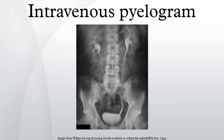In pyelography, compression involves pressing on the lower abdominal area, which results in distension of the upper urinary tract. If compression is applied, a 10-minute post-injection X-ray of the renal area is taken, followed by a KUB on release of the compression. If compression is not given, a standard KUB is taken to show the ureters emptying, sometimes with the patient lying in a prone position. A post-micturition X-ray is taken afterwards, usually as a cone bladder view.